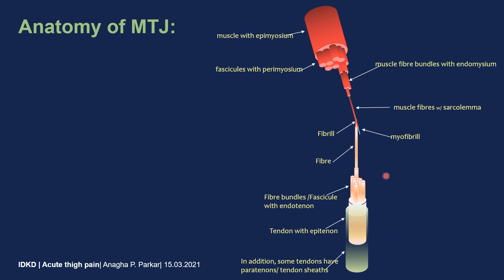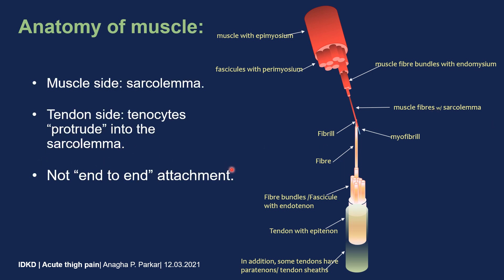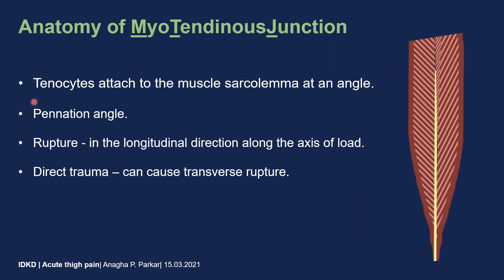The most important thing is that the muscle fibers connect to the tendons at the level of the sarcolemma. So when you have a rupture, it is not an end-to-end attachment — it slides along the tendon and the sarcolemma, making it a longitudinal rupture. The tenoside is attached to the muscle sarcolemma at an angle — a pennation angle — and the rupture is along the longitudinal direction, along the axis of load. Direct trauma can cause a transverse rupture, but usually during sports, when you have a rupture, it's along the axis of load.